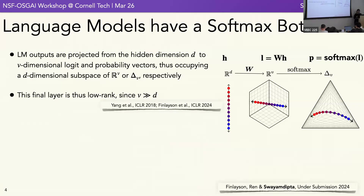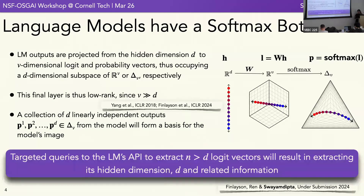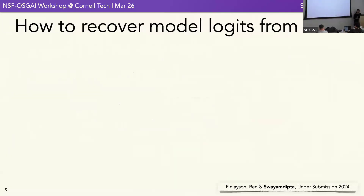As a direct consequence, if we collect d linearly independent output probability vectors from a language model, we form a basis for the model's image, which is kind of unique. In our work, we made targeted queries into closed APIs to extract something like d output vectors, which helped us extract the model's hidden dimension and related information.